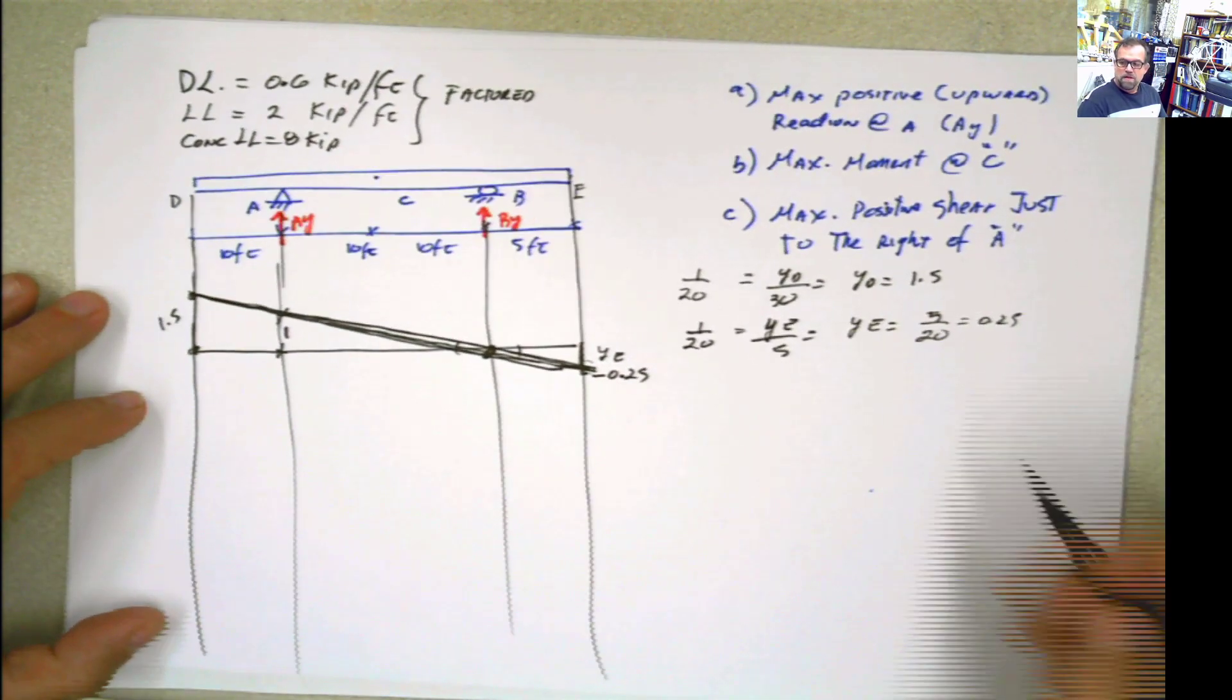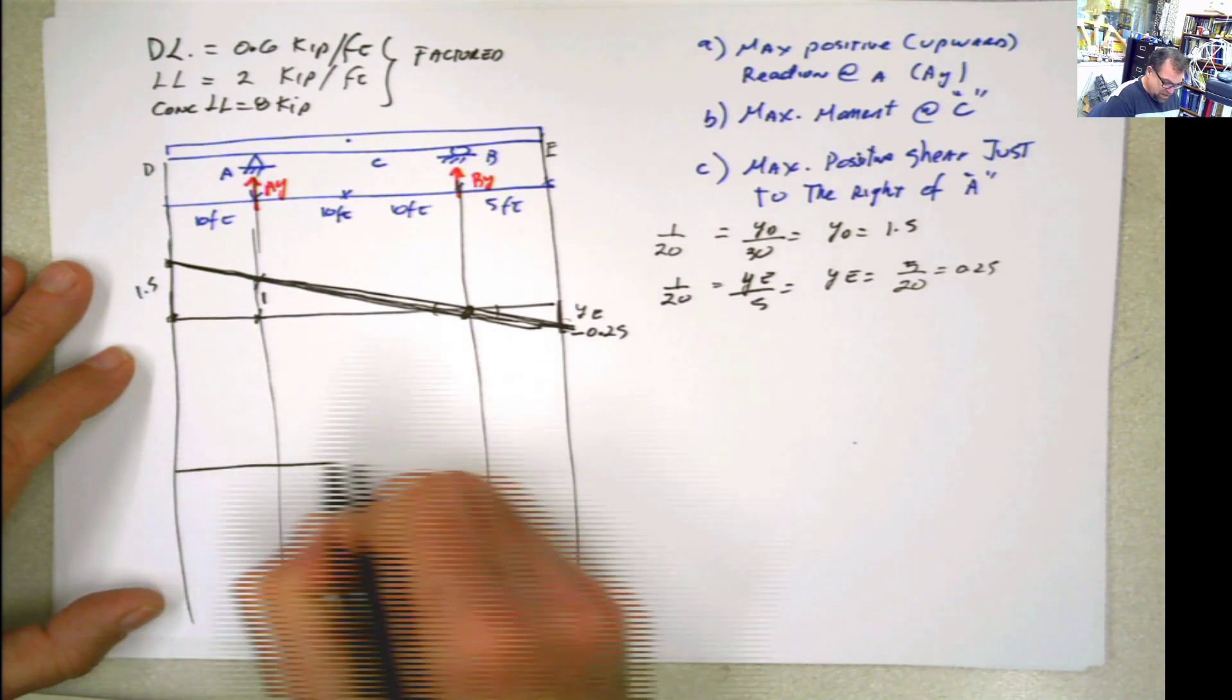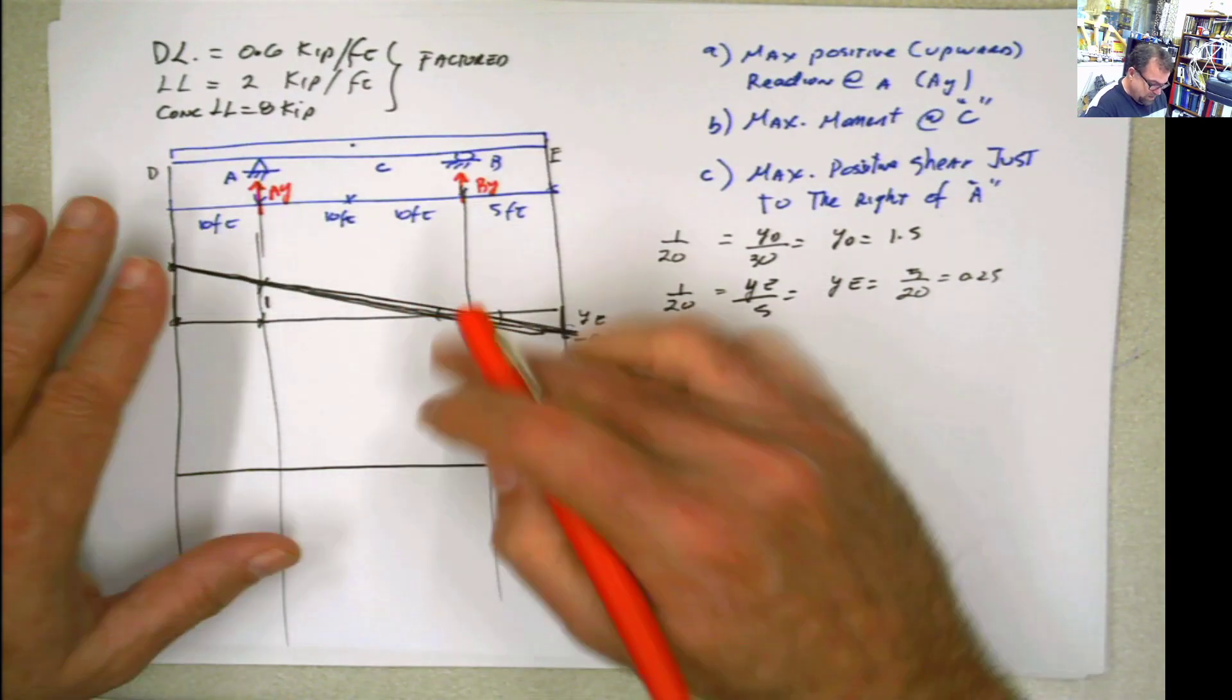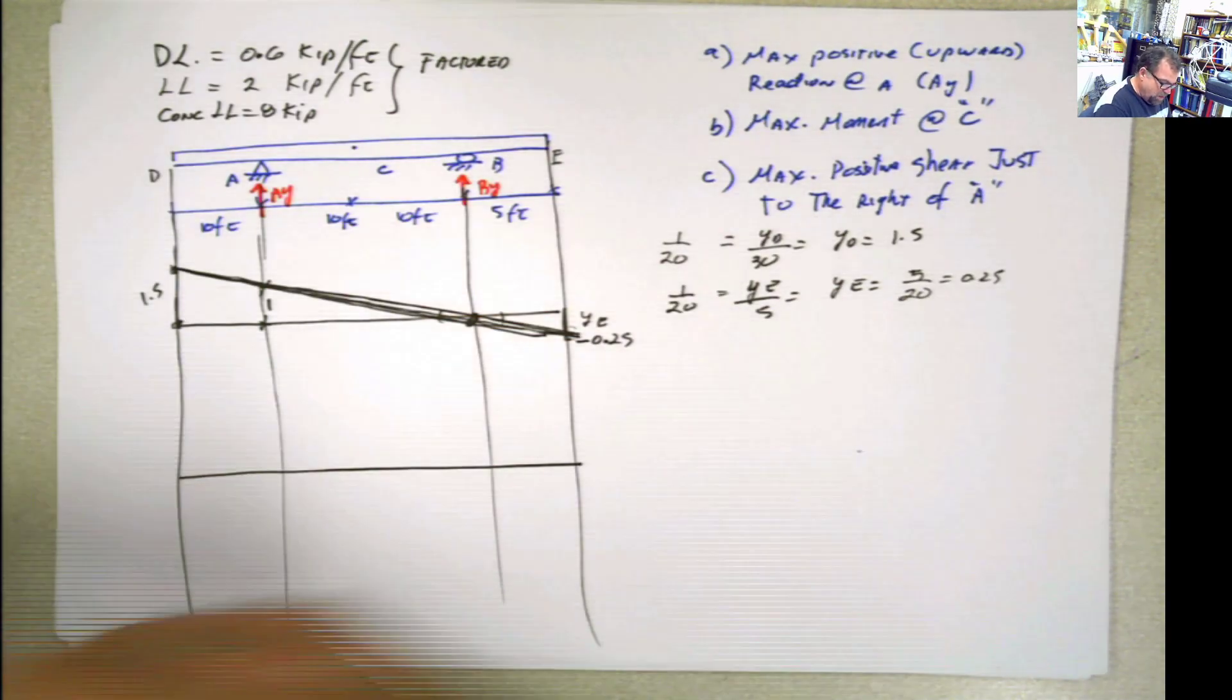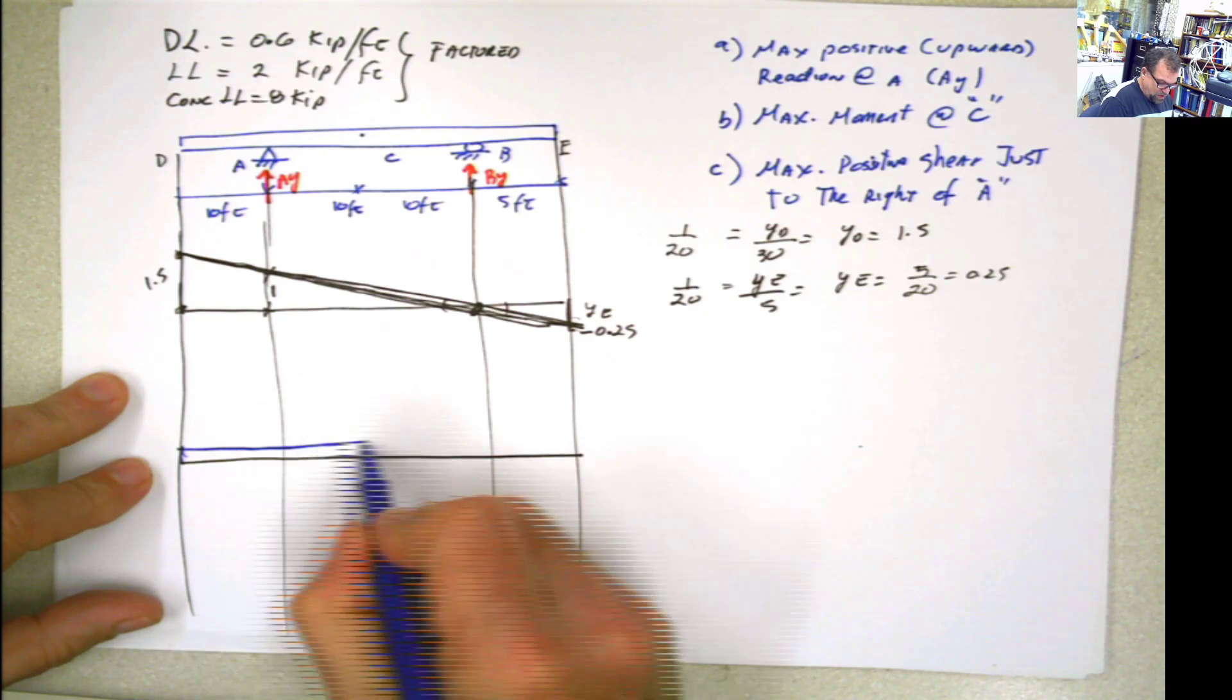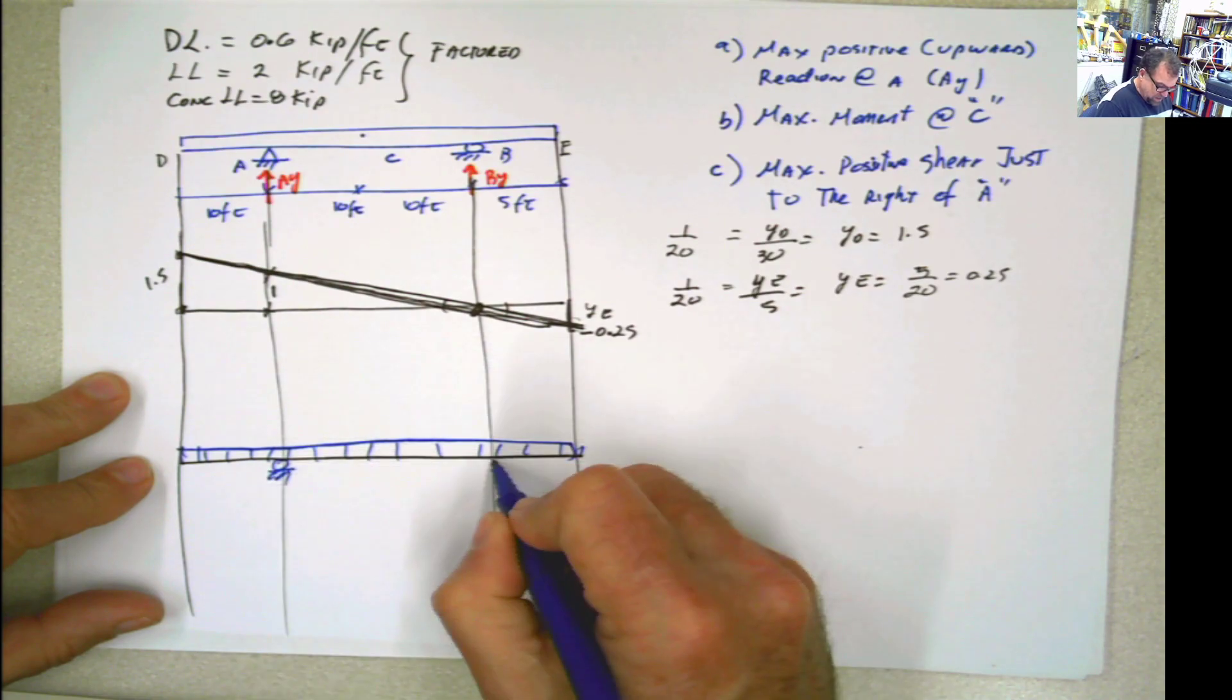Now, what do we do with it? What we have to do is this influence line is going to tell us if we want to produce a maximum positive, meaning upward reaction, this is going to be the influence area for that. What do we do with this? How do we place the loads? Start with the dead load. Dead load, we can't do anything about it. The dead load acts everywhere. So the dead load is going to be acting everywhere, like that.